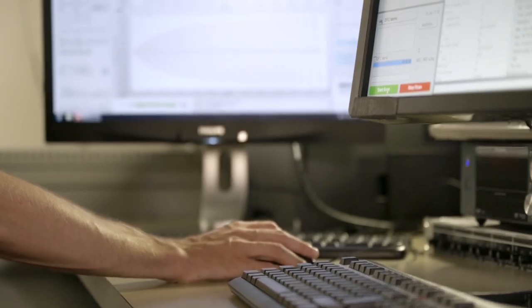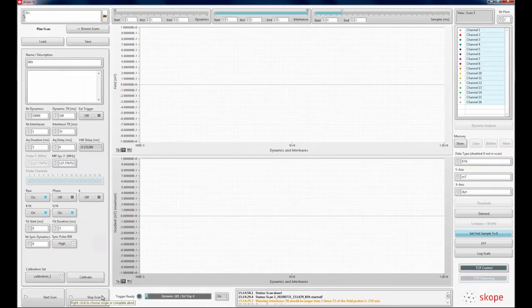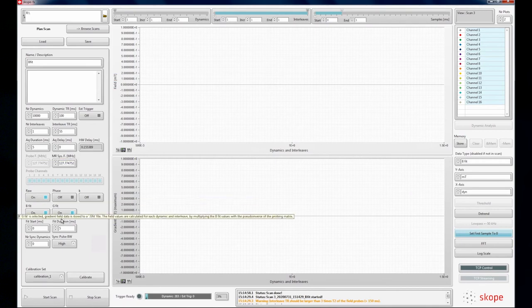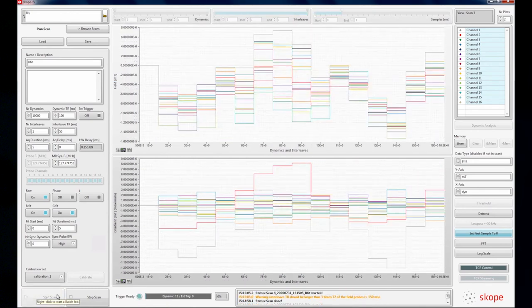In addition to monitoring system dynamics, we can investigate the influence of external fields on the scanner's field. We can set up the scope system to continuously sample the magnetic field without a sequence running. Let's start the acquisition in a free running mode and demonstrate how you can see the field fluctuate in response to a variety of sources.